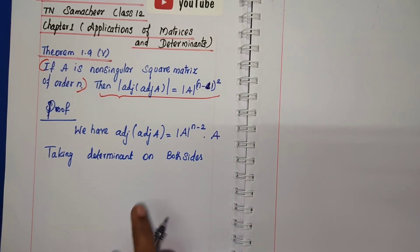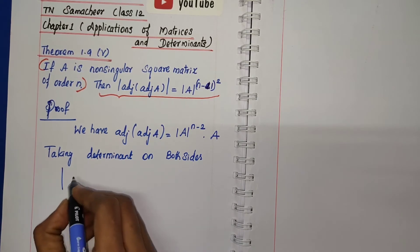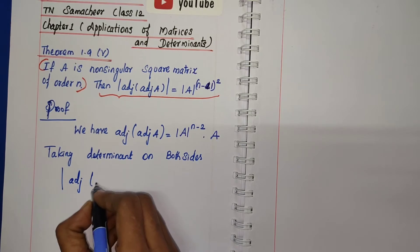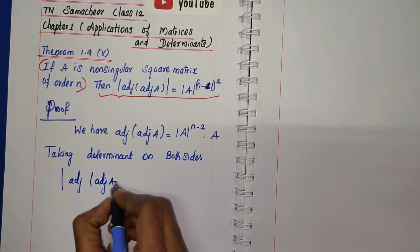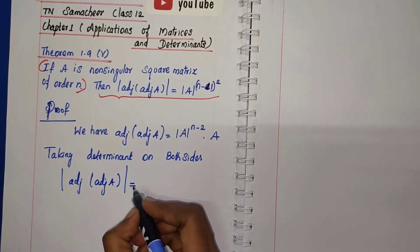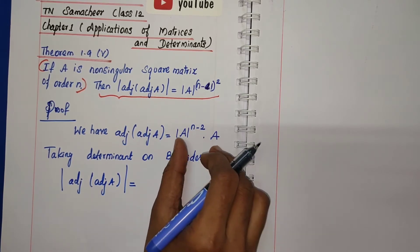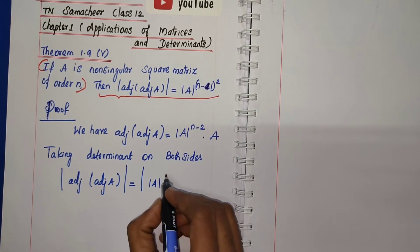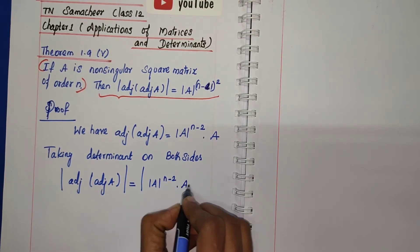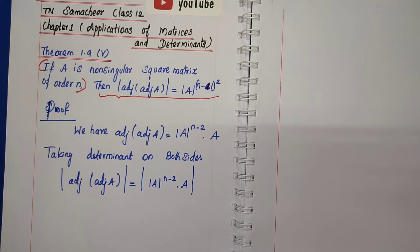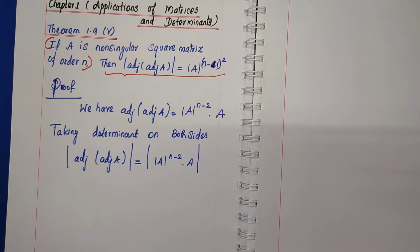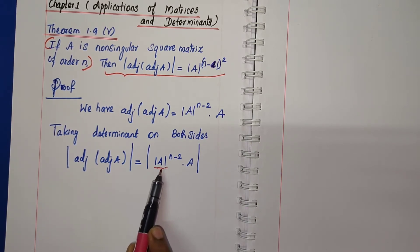Taking determinant on both sides: determinant of adjoint of adjoint A is equal to determinant of [det(A)^(n-2) · A]. In the right-hand side, det(A)^(n-2) is a scalar value and A is a matrix.